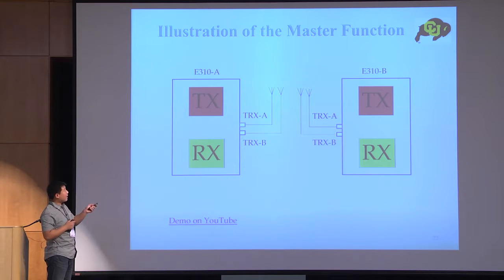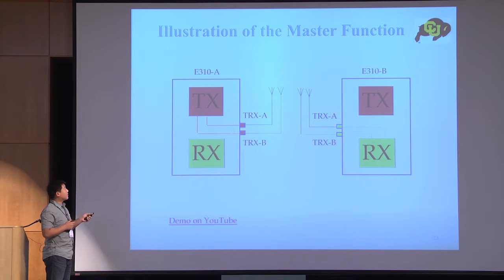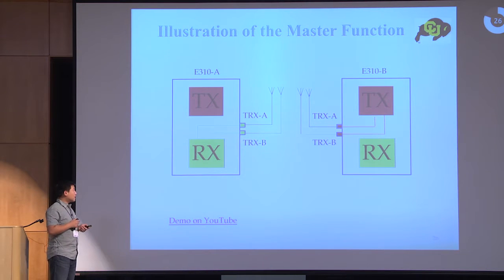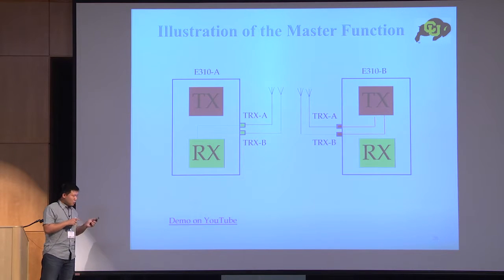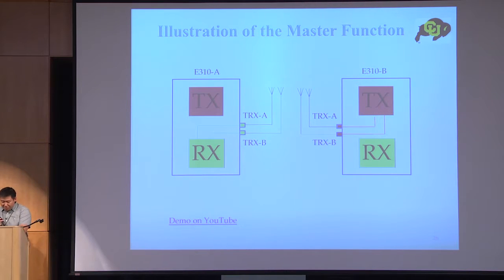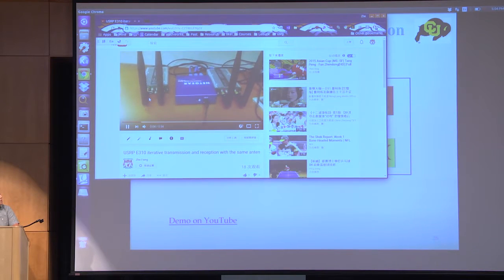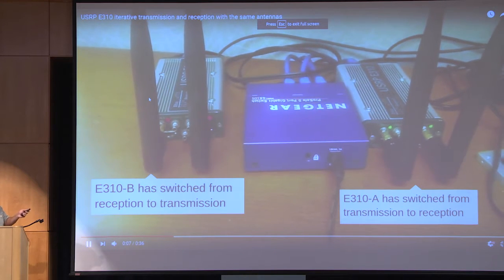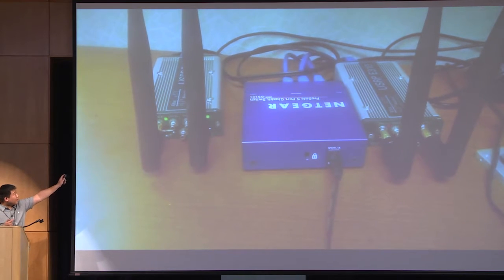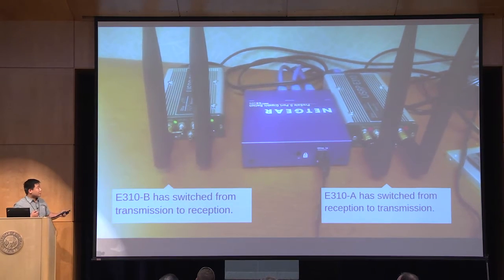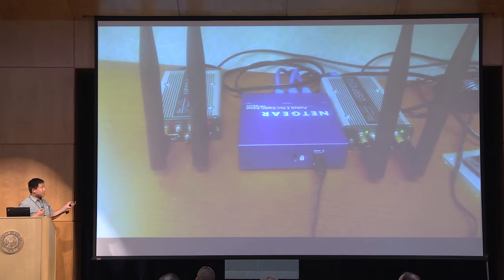These are E310 A and B. First, we do the forward transmission, activating the transmitter of E310 A and the receiver of E310 B. Then we do the reverse link. In the demo, the red link is transmission and the green one is reception. We switch back and forth between forward and reverse like this. Using this approach, we are able to make the TDD transmission work.